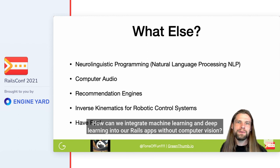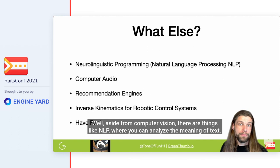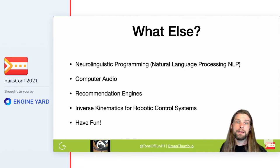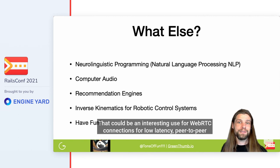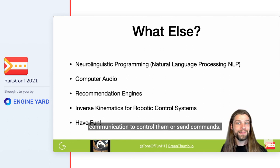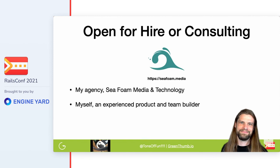How can we integrate machine learning and deep learning into our Rails apps without computer vision? Well, aside from computer vision, there are things like NLP where you can analyze the meaning of text, computer audio where you can analyze sound, recommendation engines, and even inverse kinematics where you can train robots to control themselves. That could be an interesting use for WebRTC connections for low-latency, peer-to-peer communication to control or send commands. But most importantly, have fun with it.